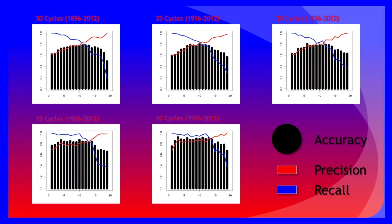It is interesting to note that the optimal cutoff seems to shift upwards as the data is limited to more recent elections, possibly indicating a general trend away from voting to re-elect whichever political party holds the presidential office at any given point in time.